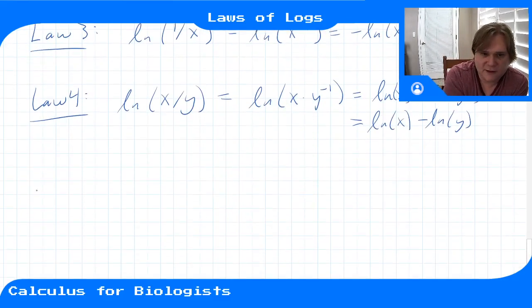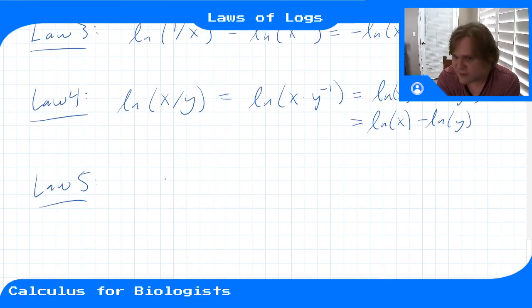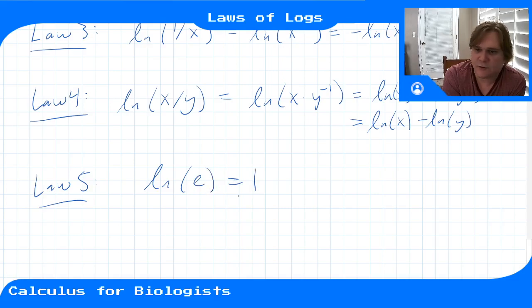Okay, and then law number 5 says that the natural log of e is equal to 1. Okay, and that's because we define these explicitly as the inverse. So if this was ln(e^1), that's what e means when it's sitting by itself. This is really e^1, so then that gives you 1.